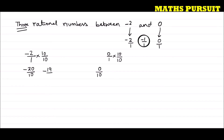We can now identify three rational numbers: minus 19 upon 10, minus 18 upon 10, and minus 17 upon 10. There are many rational numbers between minus 20 upon 10 and 0 upon 10, but we can consider any three — so we'll take these.